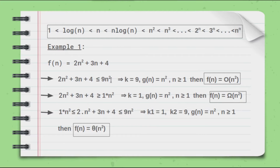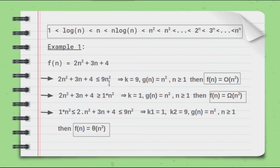Let me also clarify something. Instead of 9n², you could put 20n² — it still works. However, try to find the closest constant if possible. If you put 1000 or even one million, there's no problem, but it's not useful. Similarly, even if you take n³ or n^n as the upper bound it still works, but it's not useful. Choose the tightest, most useful bound.